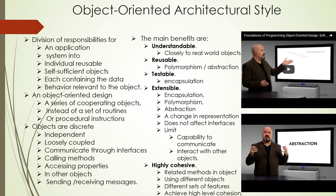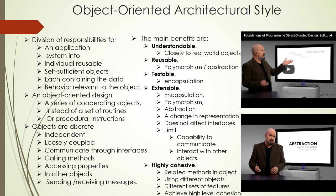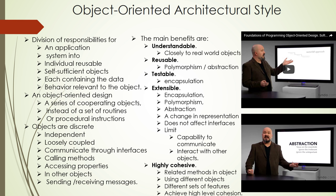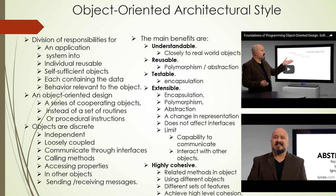Abstraction means we focus on the essential qualities of something rather than one specific example, and we automatically discard what's unimportant or irrelevant. Your mental model of a table might have a potential height and width, but it's unlikely to have an engine size or flavor, because those things are irrelevant to the idea of a table.